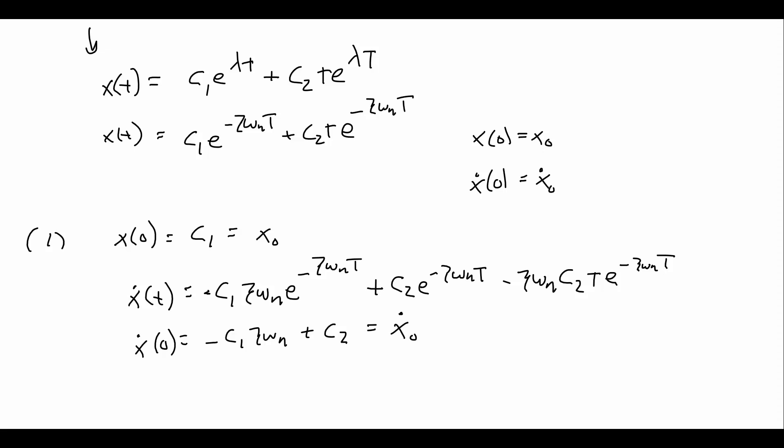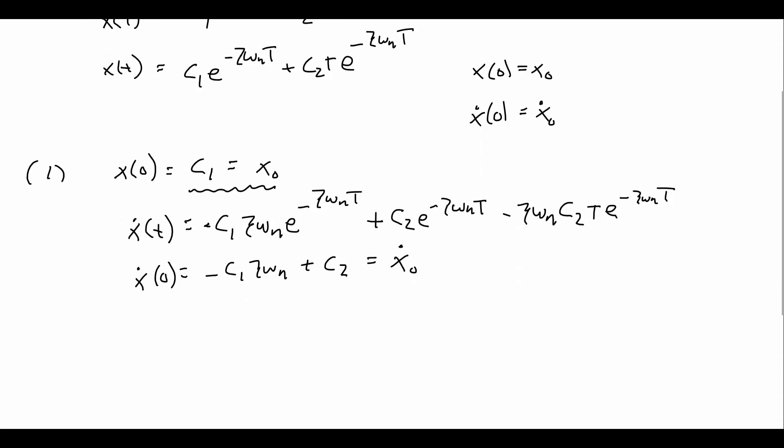Actually, c₁, we already have the solution for, is x₀. So we can rearrange this second equation a little bit more. Because we know c₁ is just x₀, we have -x₀ζωₙ + c₂ equals ẋ₀. So c₂ must equal ẋ₀ + x₀ζωₙ.